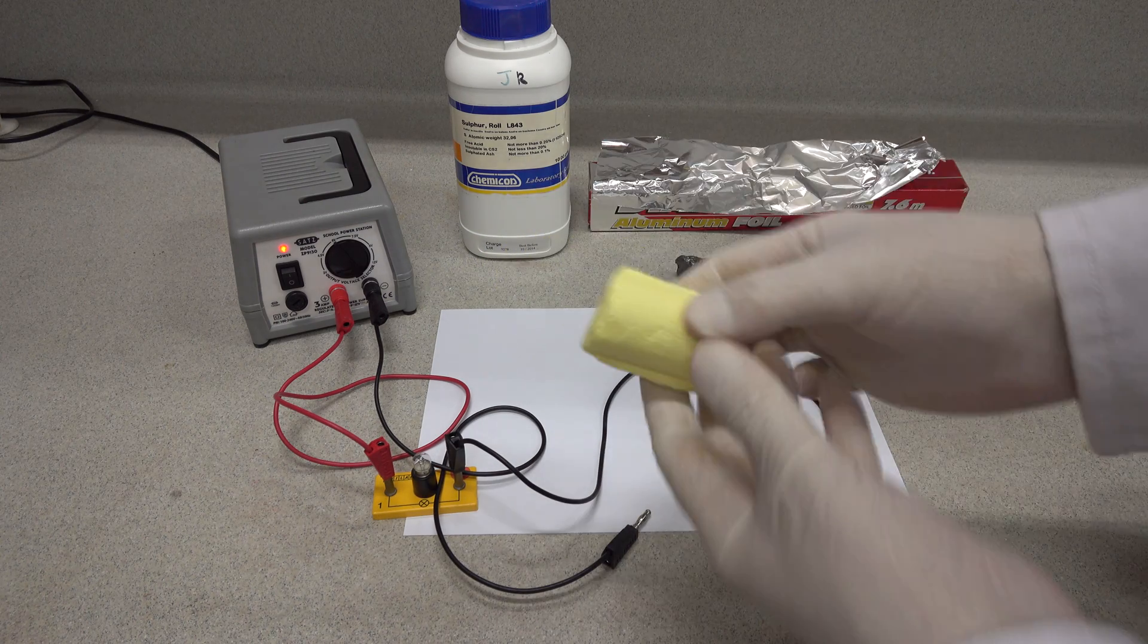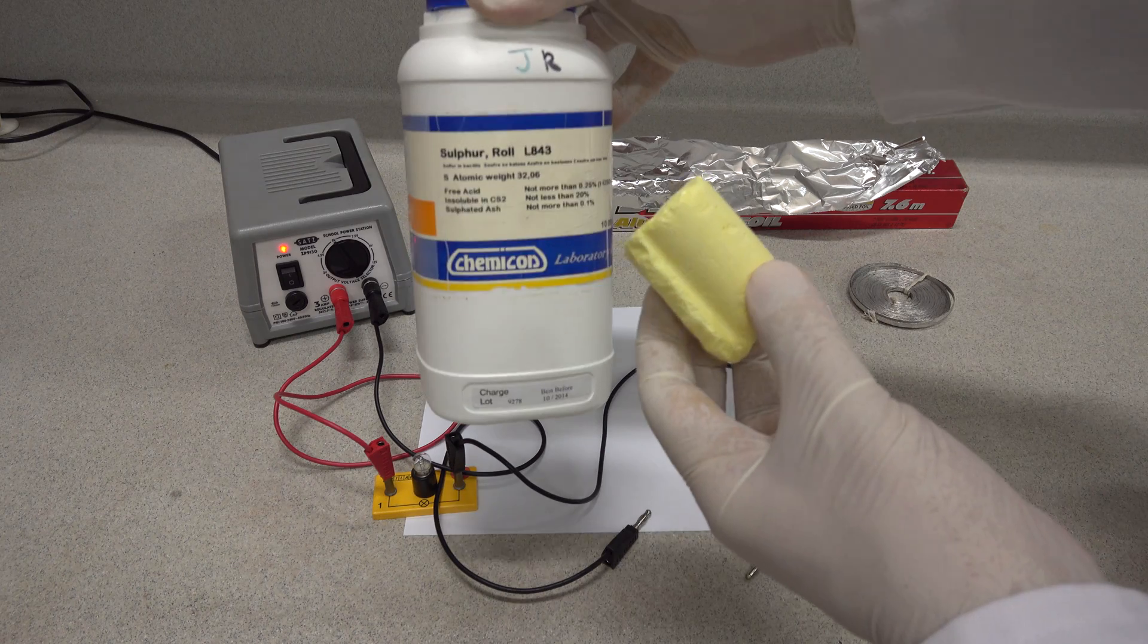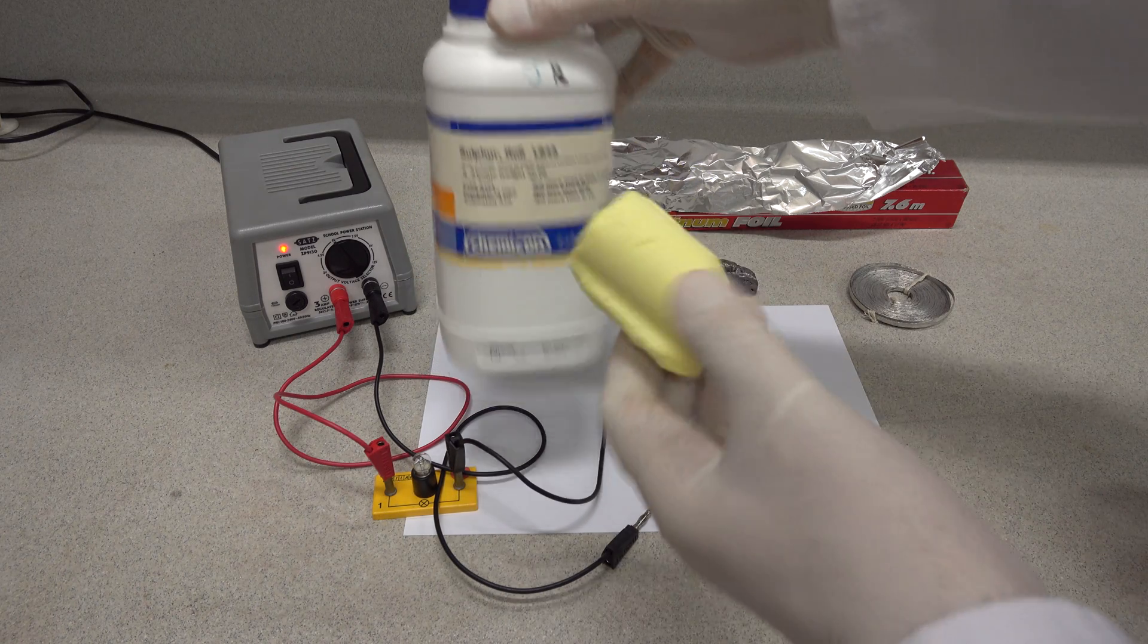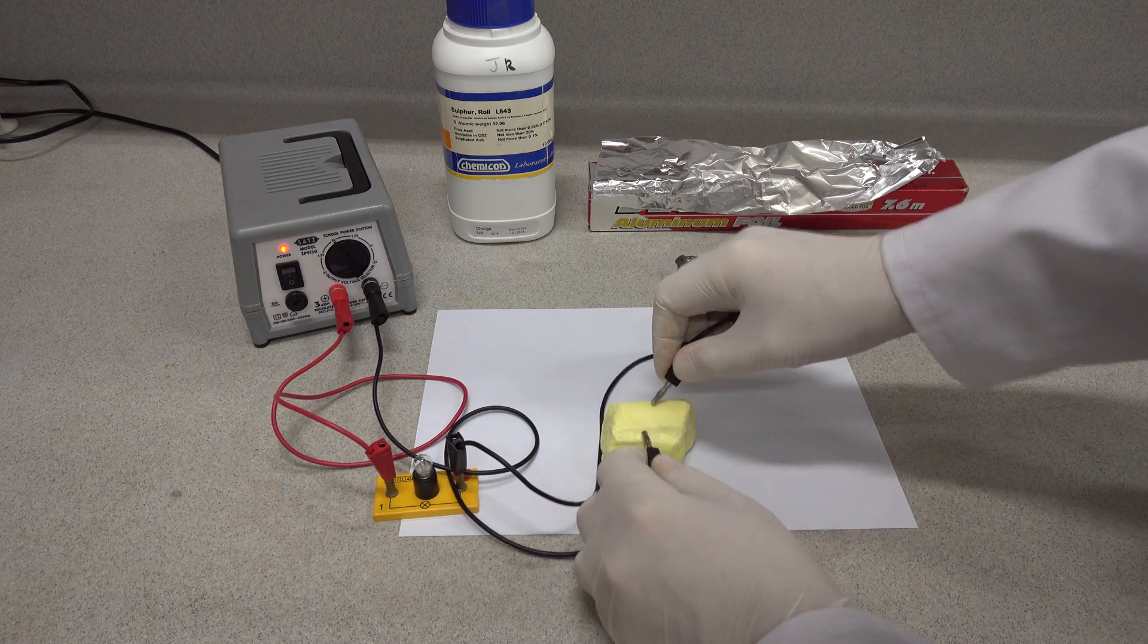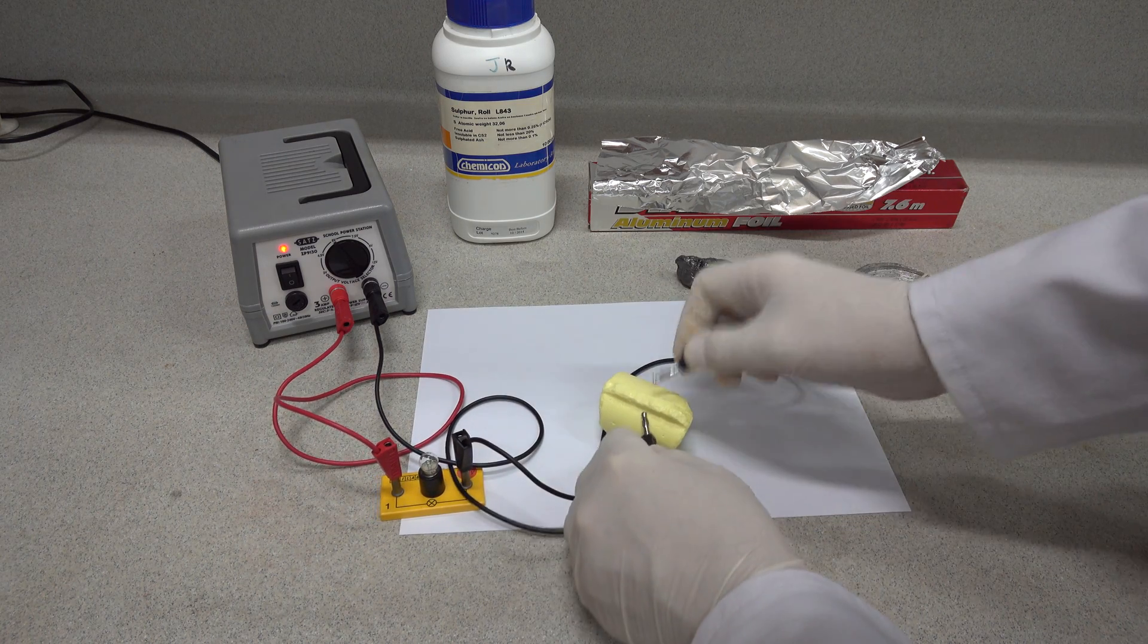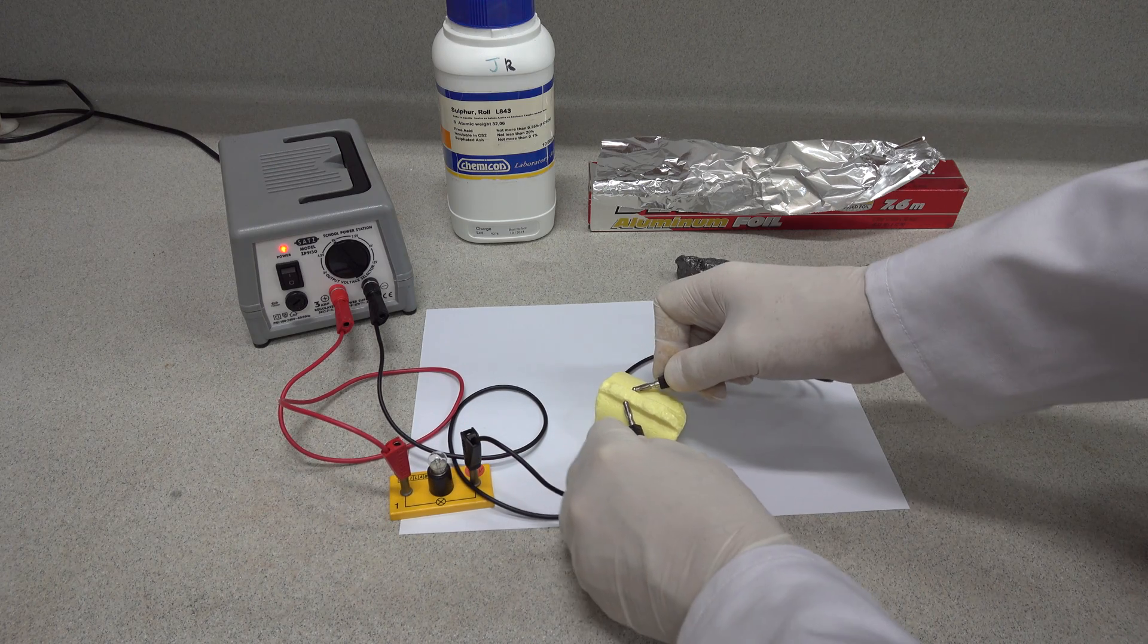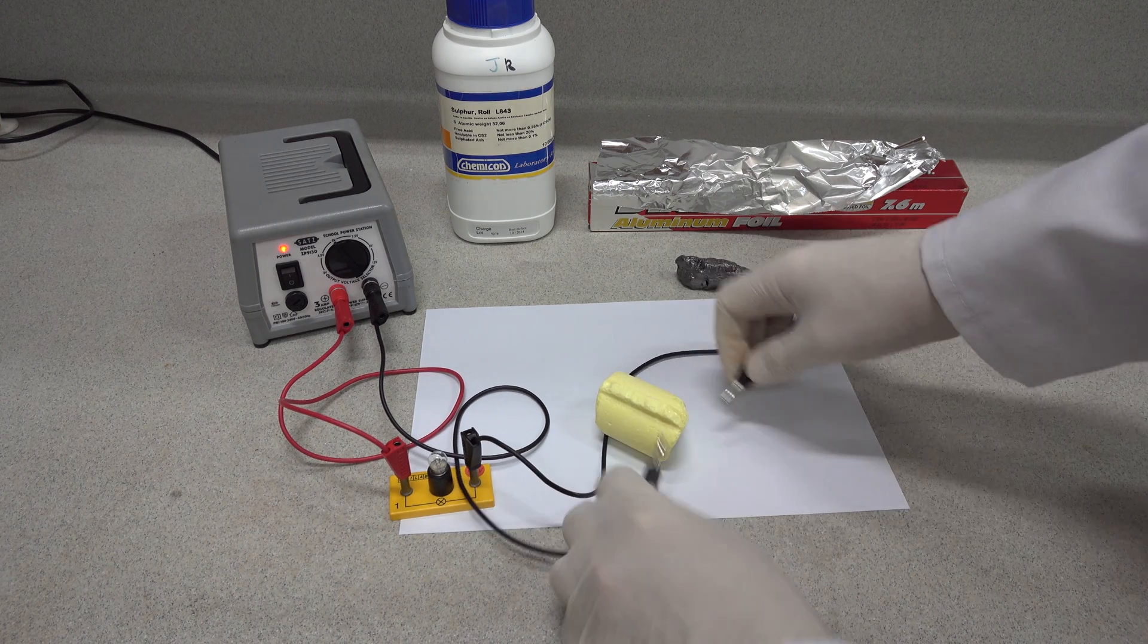So for our first element, that's this bright yellow sulphur here, and let's see if that conducts electricity. You can see if we place the contacts on the sulphur, the bulb does not light.